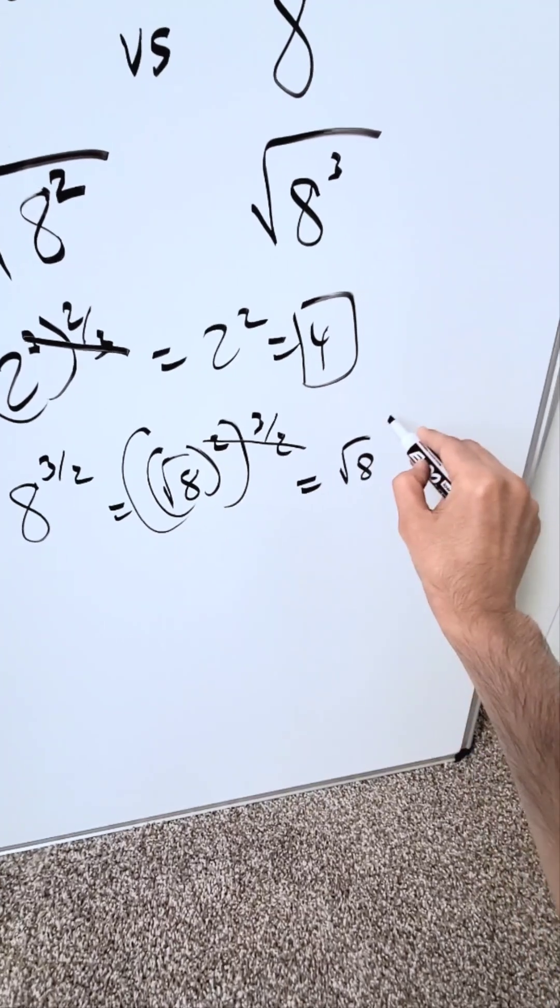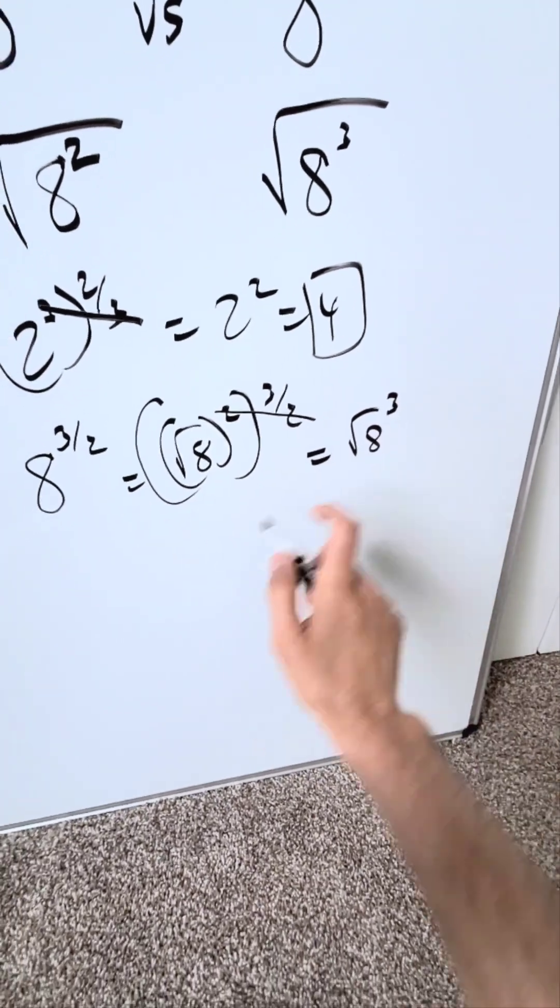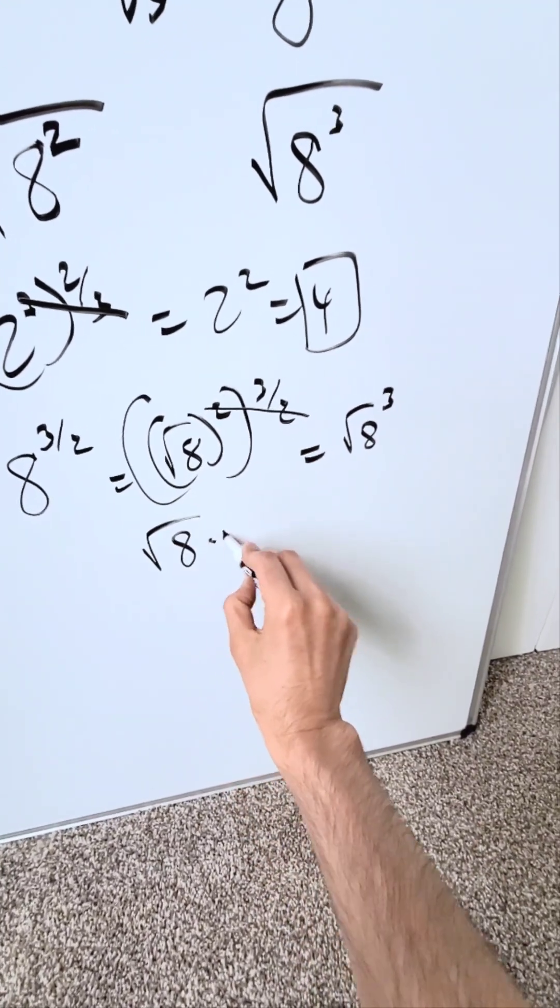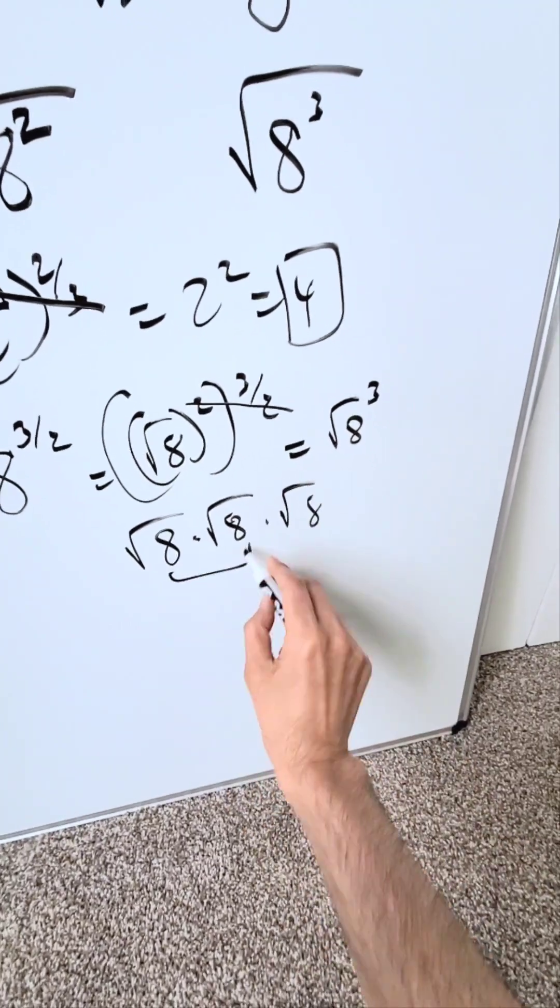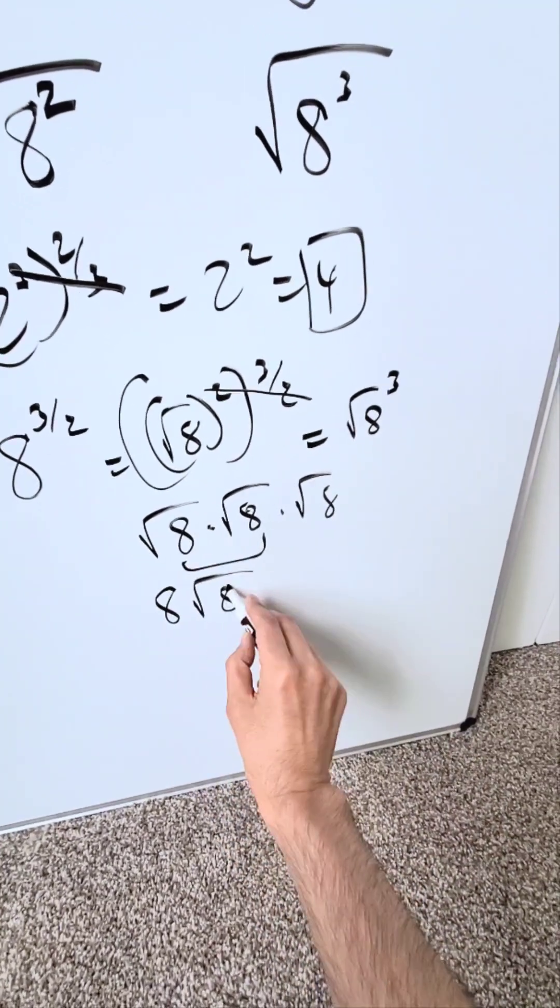What you're really looking at is root 8 to the power of 3 and you know that to be root 8 times root 8 times root 8. These two will come together as an 8 and you have a root 8.